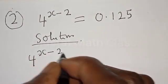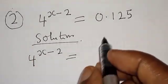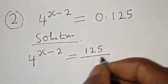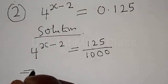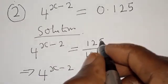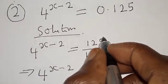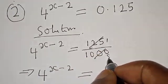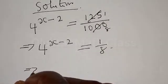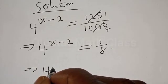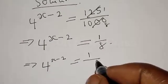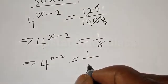For the second question: 0.125 can be expressed as 125 over 1000. We have 4 raised to power x minus 2 is equal to 125 divided by 1000, which simplifies to 1 over 8. Therefore 4 raised to power x minus 2 is equal to 1 over 8, and 1 over 8 can be expressed as 1 over 2 raised to power 3.